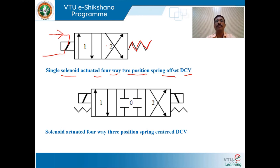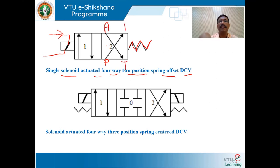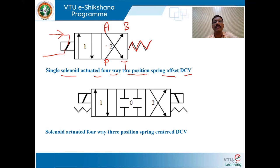In the spring-offset mode — four-way, two-position — P and tank line, and output ports A and B connected to the cylinder are shown. In the spring-offset mode, P is connected to B and A is connected to the tank line.